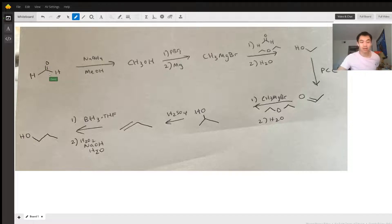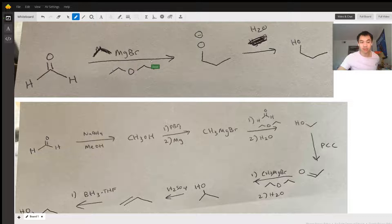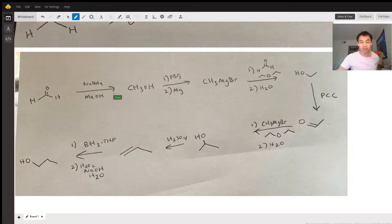Since you have aldehyde here, you can do a Grignard reaction to add more carbons, just like we did for the first one. This time we can only do it one carbon at a time, starting with formaldehyde.